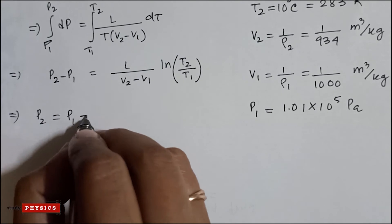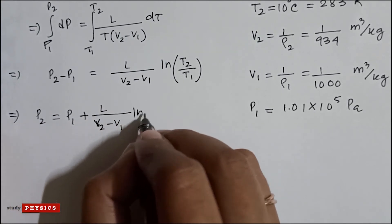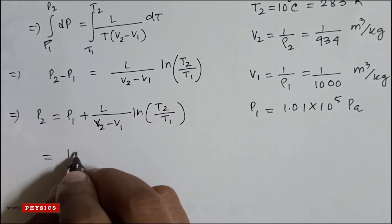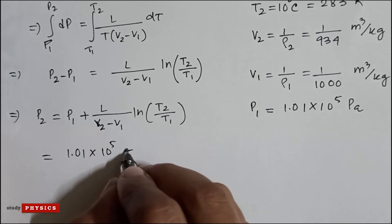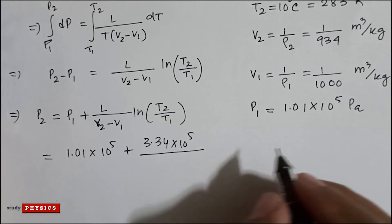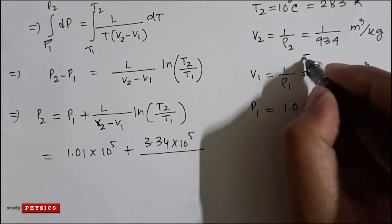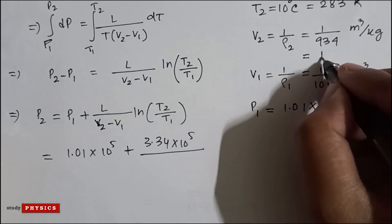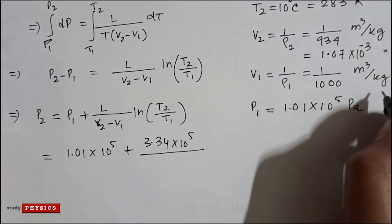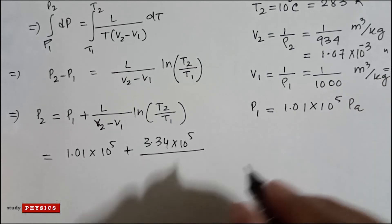So P2 equals P1 plus L divided by (V2 minus V1) times ln(T2 divided by T1). That is 1.01 into 10 to the power 5 plus 3.34 into 10 to the power 5 divided by (V2 value is 1.07 into 10 to the power minus 3 meter cube per kg minus 10 to the power minus 3 meter cube per kg).